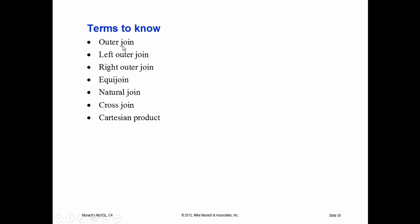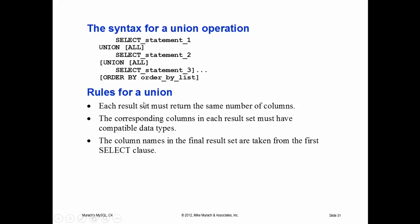An outer join, whether left or right, means you want to match every record in one of the two tables even if there's no match in the other. A left outer join matches all the ones on the left even if there's no match on the right; a right outer join matches all on the right even if there's none on the left. An equi-join is an inner join working with equality. A natural join is a shortcut we talked about. Cross joins and Cartesian products, not always but quite often, are mistakes.